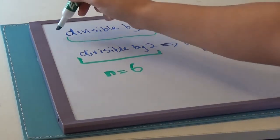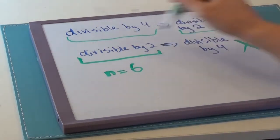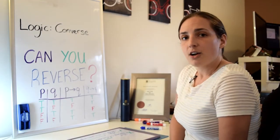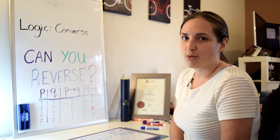Here's an example where we have one if-then statement, and we have its converse, and its converse is not true. So just keep in mind, converses are pretty easy, it's just the reverse.